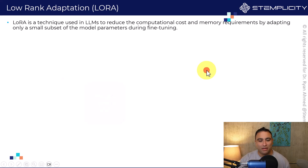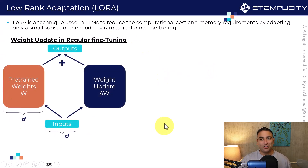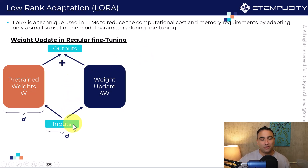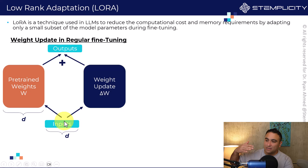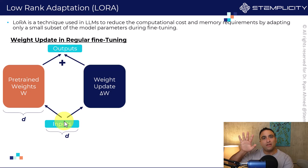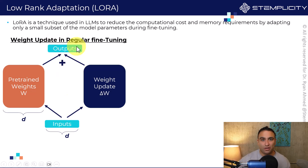Let me show you what I mean by that. On the left hand side here, this is the regular fine-tuning process from a very high level. This is an artificial neural network that has weights — these are what we call pre-trained weights. We have inputs, and we take these inputs through matrix multiplication through the network to generate outputs.